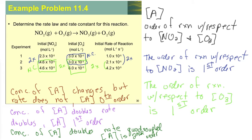If the concentration of reactant A tripled, the rate would have to go up by a factor of nine to be second order. If the concentration went up by a factor of four, the rate would have to go up by a factor of 16 to be second order. To summarize: determining the order of reaction with respect to the concentration of any given reactant works as described. When finding the order with respect to one reactant, the other reactant's concentration must be constant — then evaluate how much the concentration change compares to the rate change.